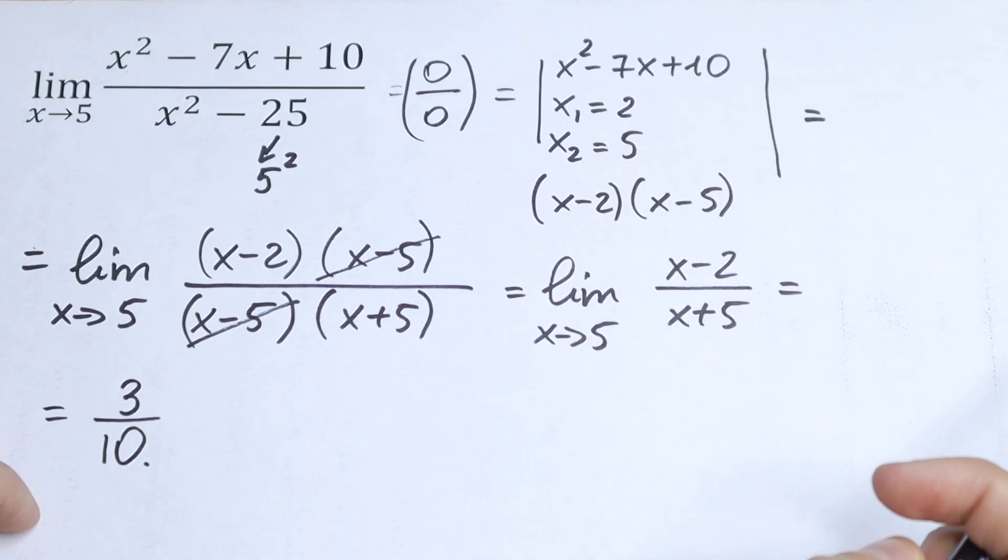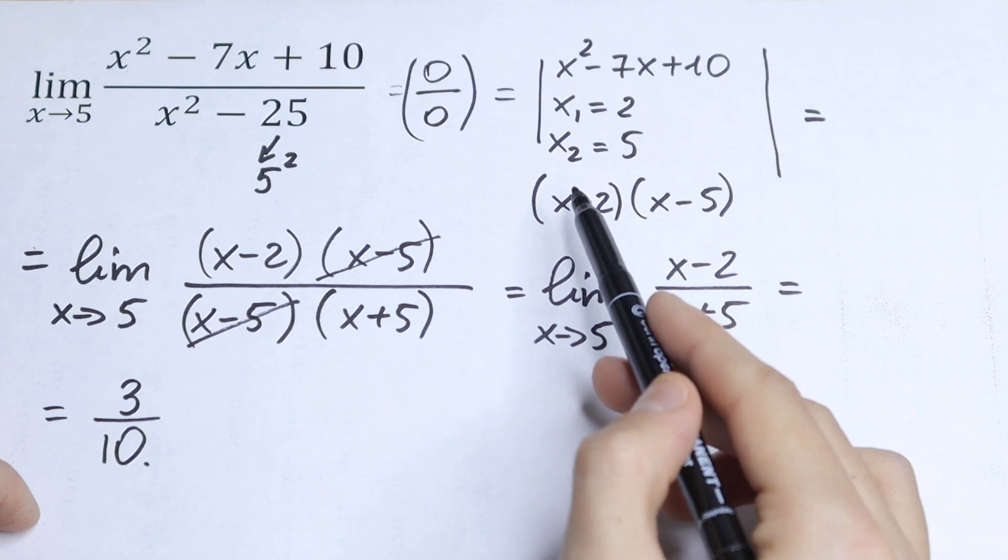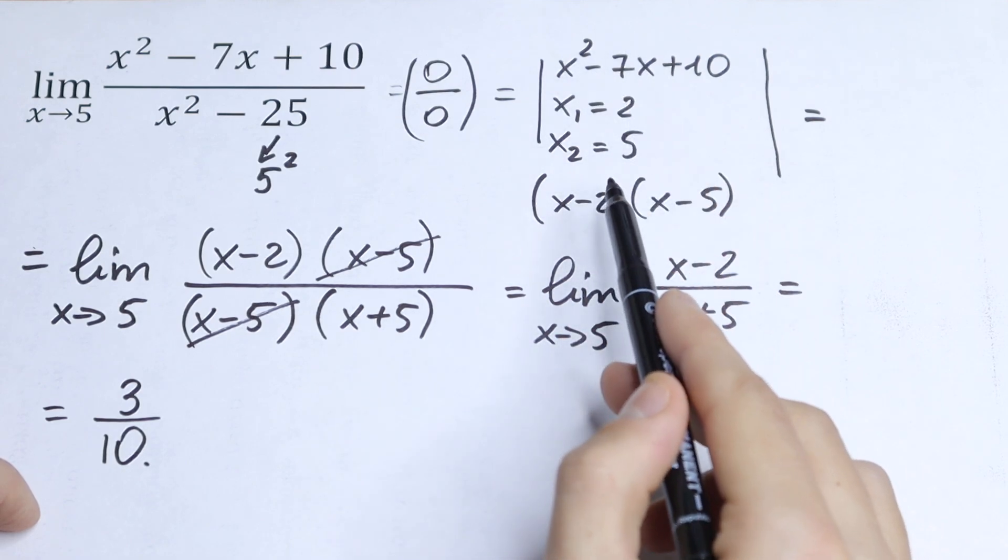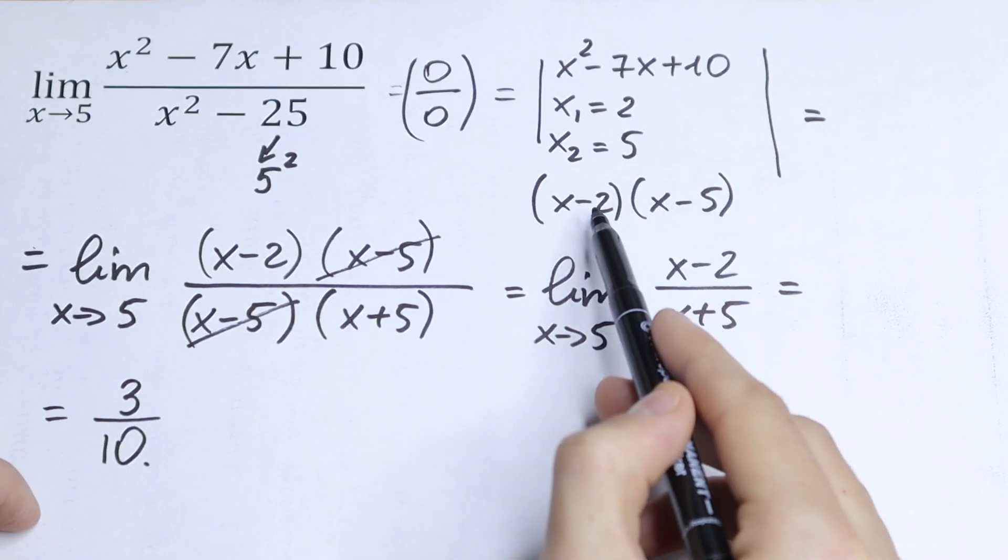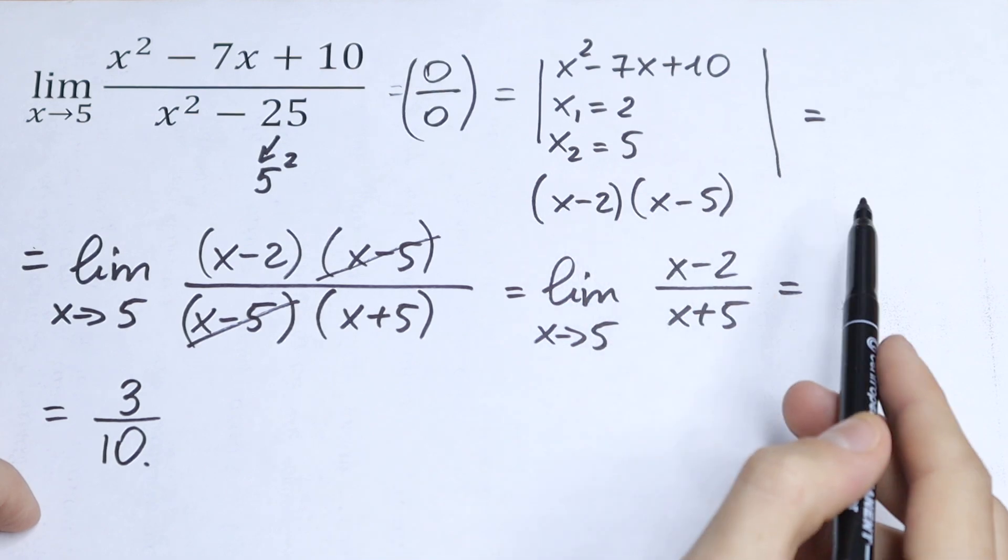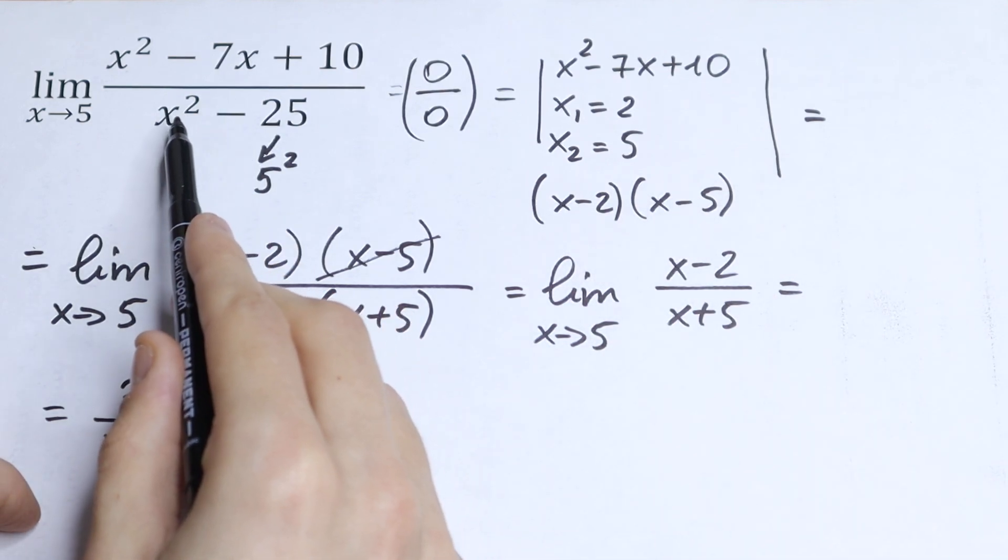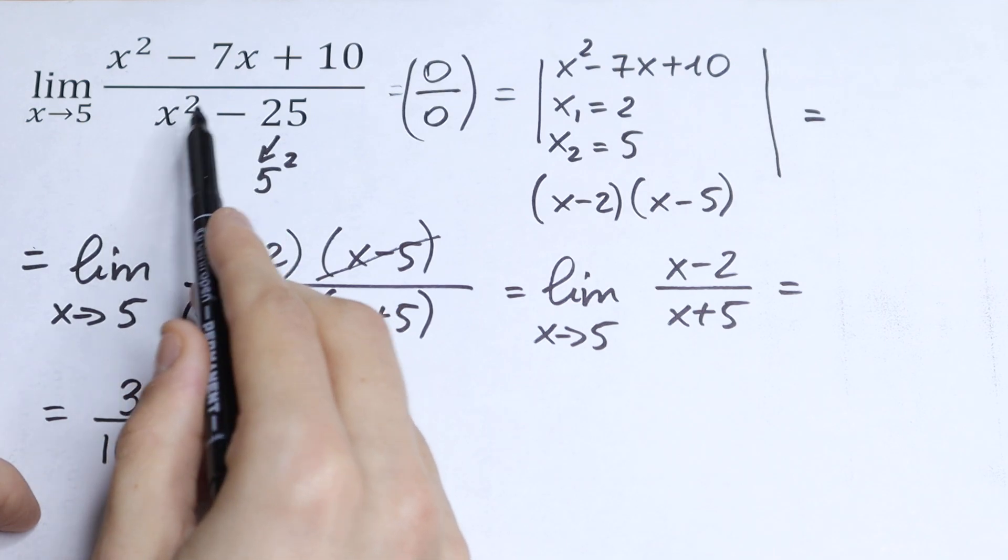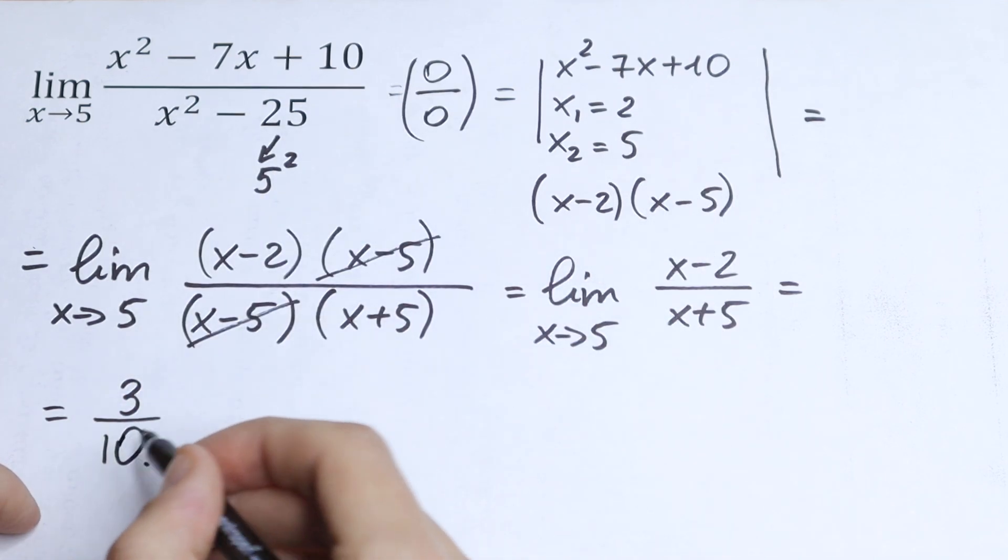I hope you all understand this. Nothing hard. Just write the quadratic equation as a product of two parentheses and use the difference of squares formula. This is our answer.